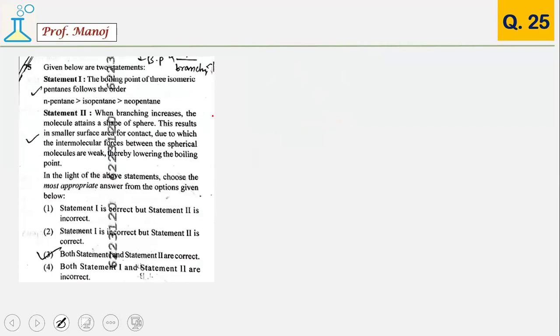This is an NCERT pickup question from hydrocarbons. You have 3 isomeric pentanes and their boiling point orders are n-pentane greater than iso greater than neo. This is a true statement. The fact is that as branching increases, related to forces of attraction, boiling point decreases. Both statements are true. The answer is 3.